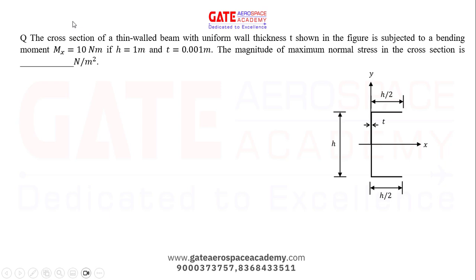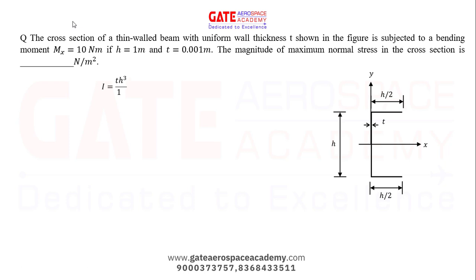When applying bending moment, the formula to calculate bending stress is sigma equals M/I times y. To find the maximum value of sigma, we substitute the maximum distance y from the centroid location. First, let's find the moment of inertia I. For the web section, the formula is bd³/12, which gives t·h³/12.